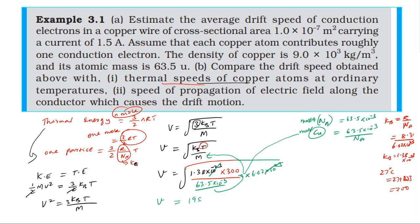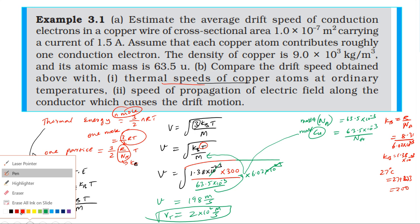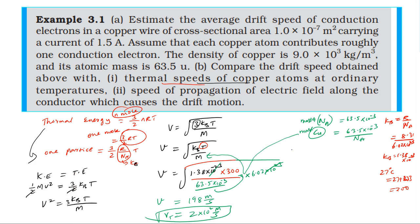Thermal speed comes out to approximately 198 meter per second, rounded up to 200 meter per second, that is 2 × 10² meter per second. Comparing: drift speed is on the order of 10⁻³ and thermal speed is on the order of 10², so drift speed is 10⁻⁵ times the thermal speed.